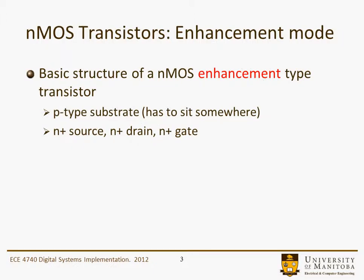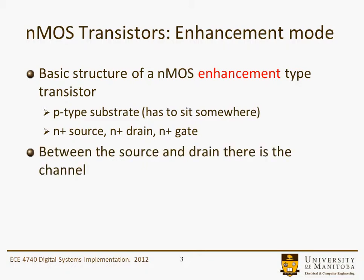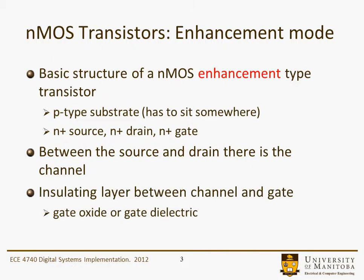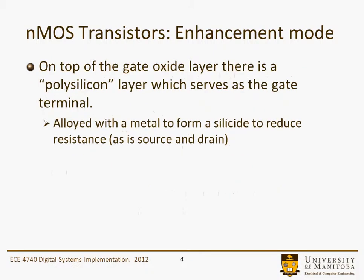The nMOS transistor we're going to look at is the enhancement mode. The basic structure of an nMOS enhancement type transistor includes a p-type substrate — the transistor has to sit somewhere. There's an n-plus source, an n-plus drain, and an n-plus gate. Between the source and the drain there's the region called the channel, and there's an insulating layer between the channel and the gate, called the gate oxide or gate dielectric.